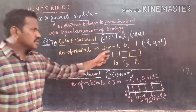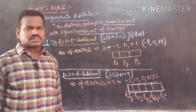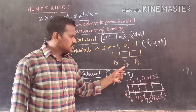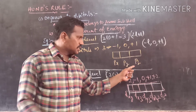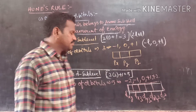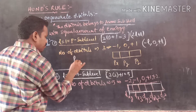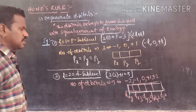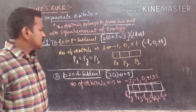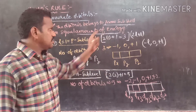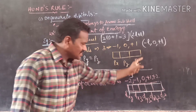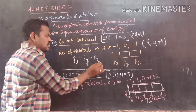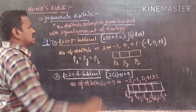We represent them in the form of a box. Along the x-axis is called Px, along the y-axis is called Py, and along the z-axis is called Pz. The energy of Px equals the energy of Py equals the energy of Pz. All three orbitals belong to the same subshell, the P sublevel, and have equal energy — these are called degenerate orbitals.